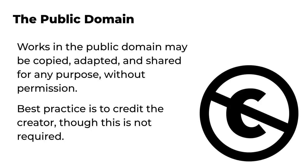The public domain consists of creative works that are not subject to copyright. Anyone is free to copy, adapt, and share them without permission. A work can enter the public domain in one of four ways. One, its copyright term expires — this mainly applies to older works. Two, the copyright holder failed to comply with formalities to acquire or maintain their copyright — this too mainly applies to older works.